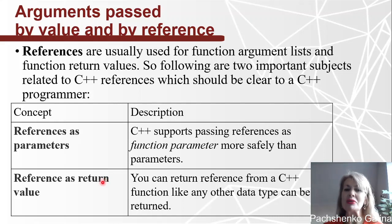References are usually used for function argument lists and function return values. So following are two important subjects related to C++ references which should be clear to a C++ programmer. Let's see concepts and descriptions. References as parameters: C++ supports passing references as function parameters more safely. References as return value: you can return reference from a C++ function like any other data type can be returned.